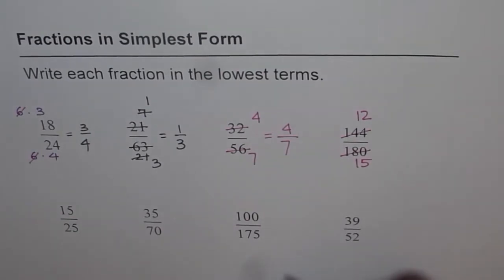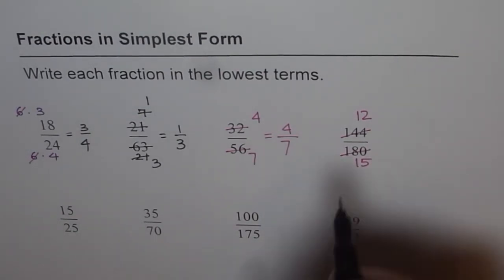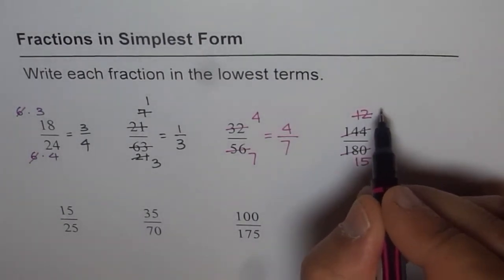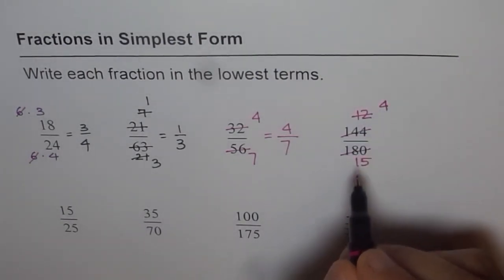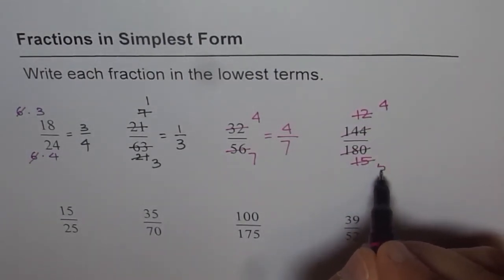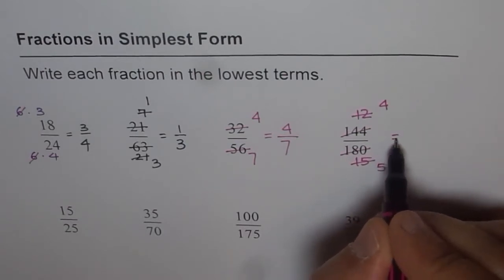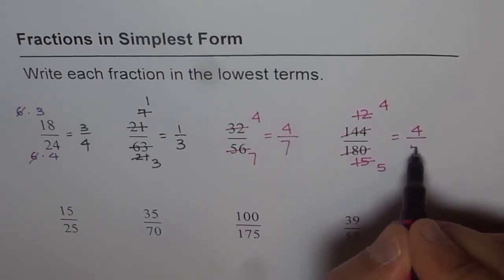Now do they have any common factor? Yes. Both can be divided by 3. So if you divide 12 by 3, what do you get? 4. And 15 divided by 3 is 5. So our answer is 4 over 5.